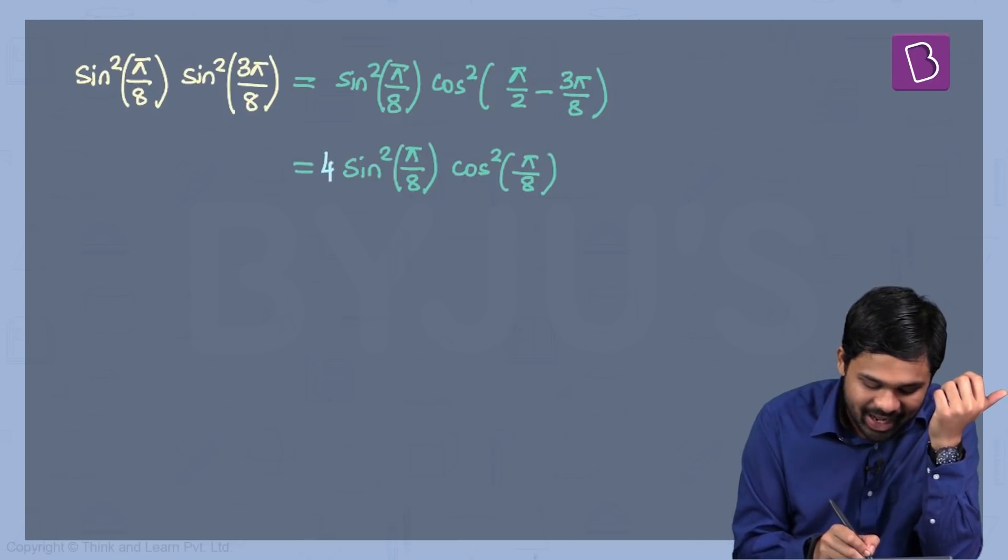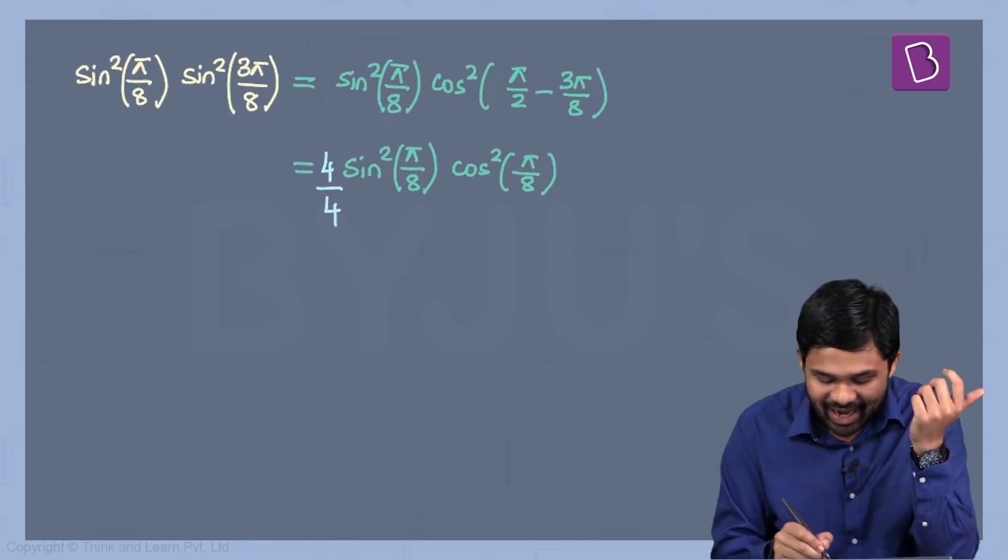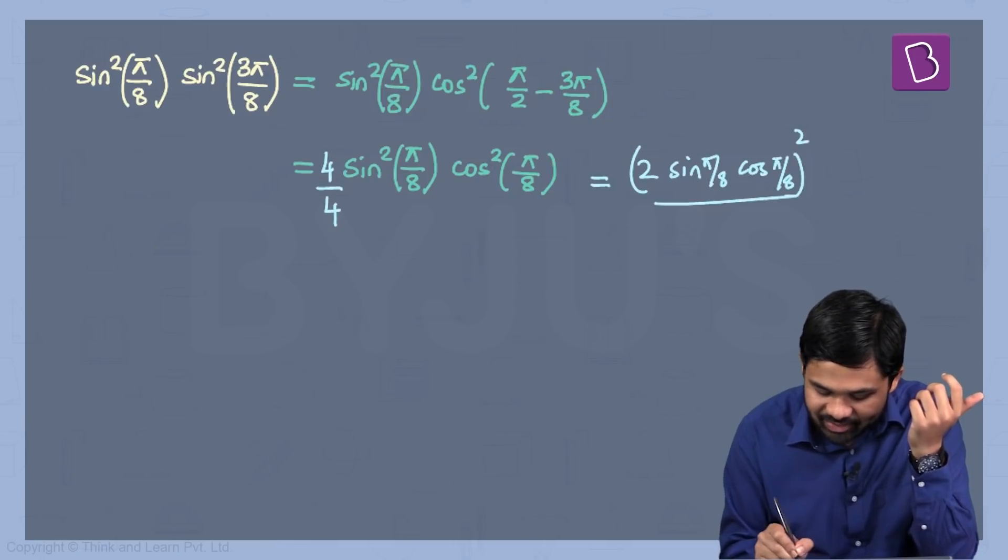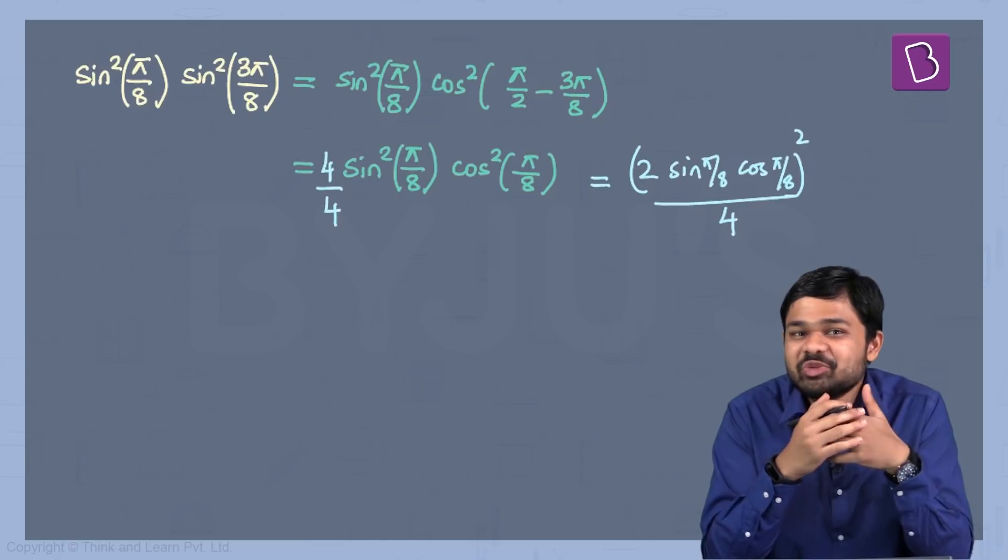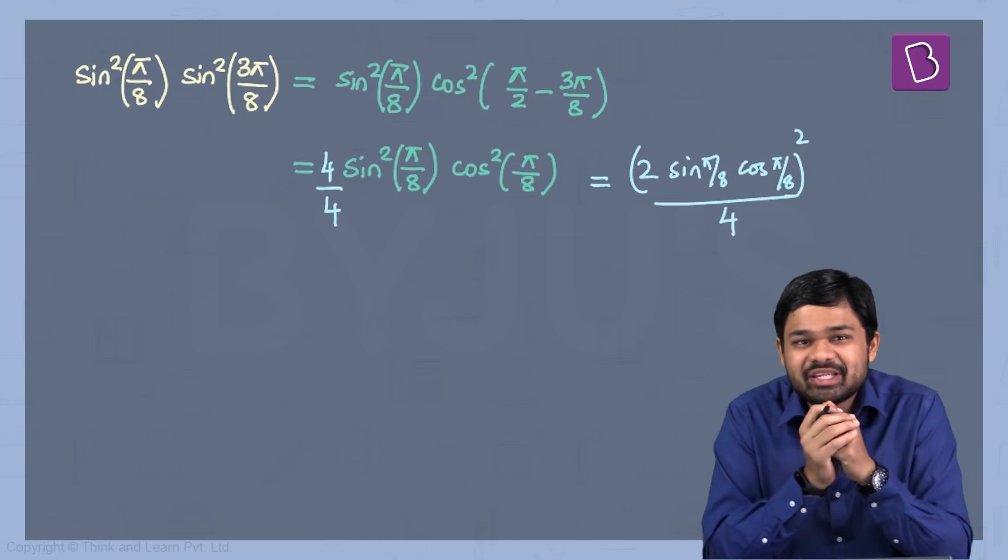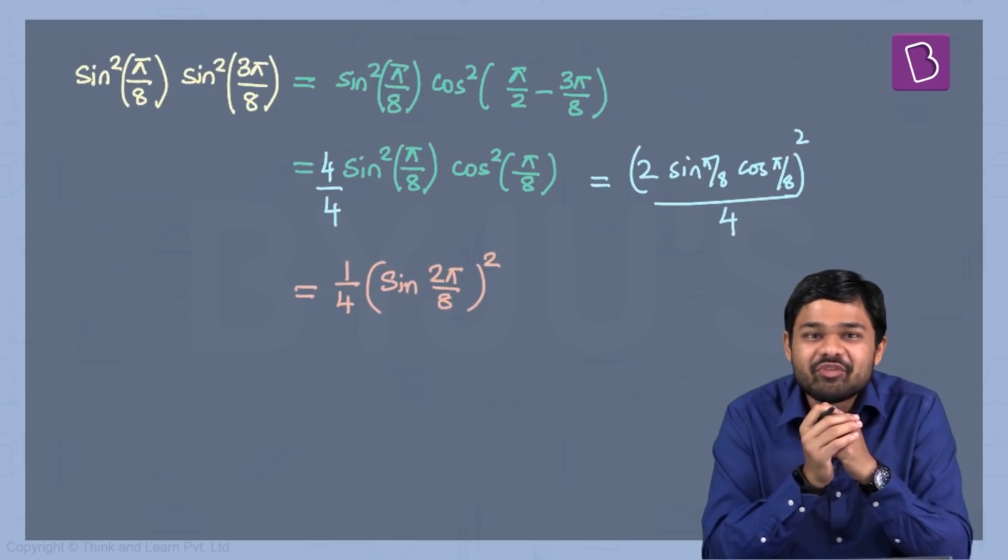As soon as you have sin²(π/8) and cos²(π/8), I'm going to multiply and divide by 4, and I can write this as (2 sin(π/8) cos(π/8))² divided by 4. Now you have 2sin(a)cos(a), which is nothing but sin(2a), and my expression reduces to (1/4)(sin(2π/8))².